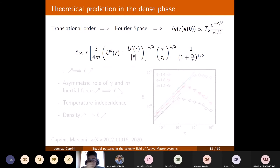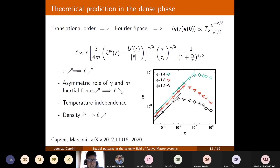We developed a theory for active solids in Fourier space and were able to analytically calculate the spatial shape of the velocity correlation — which has an exponential-like shape, as already noted — and in particular to calculate the correlation length of the spatial velocity correlations as a function of the model parameters without employing any fitting procedures or fitting parameters. As a result of this prediction, the correlation length is an increasing function of the persistence time, shown in the graph on the right for different persistence times and packing fractions, with quite good agreement, except close to the solid-hexatic transition where the assumptions behind the calculation no longer hold.